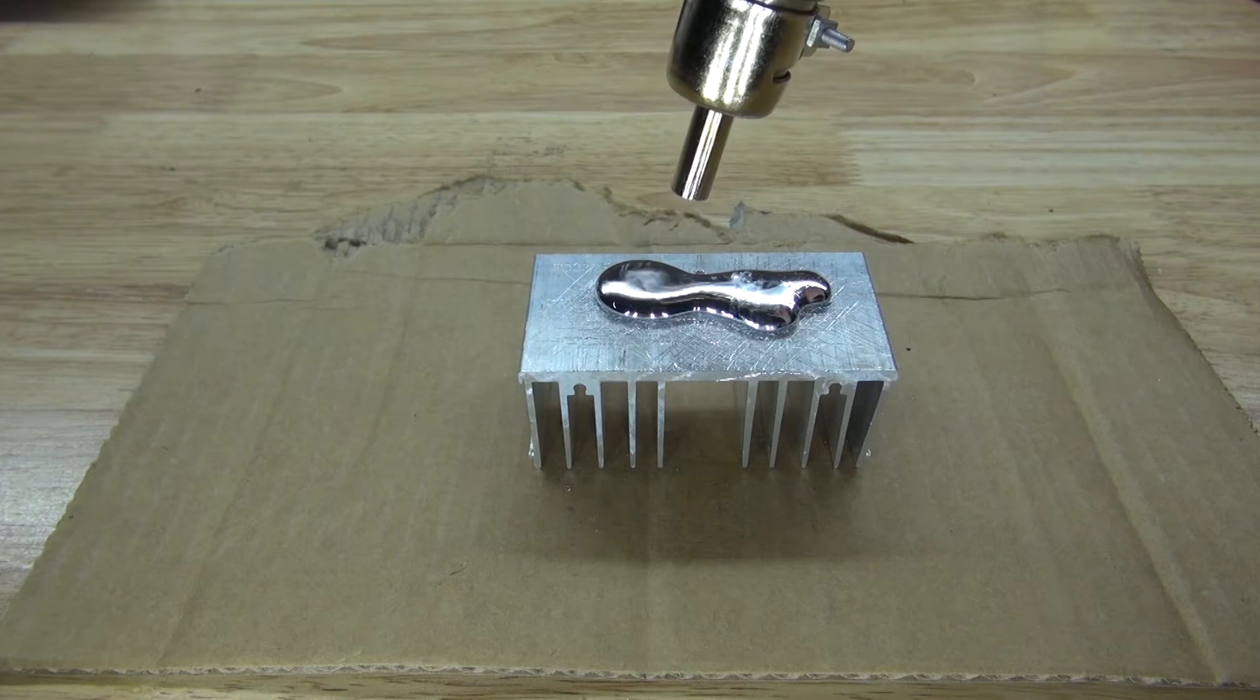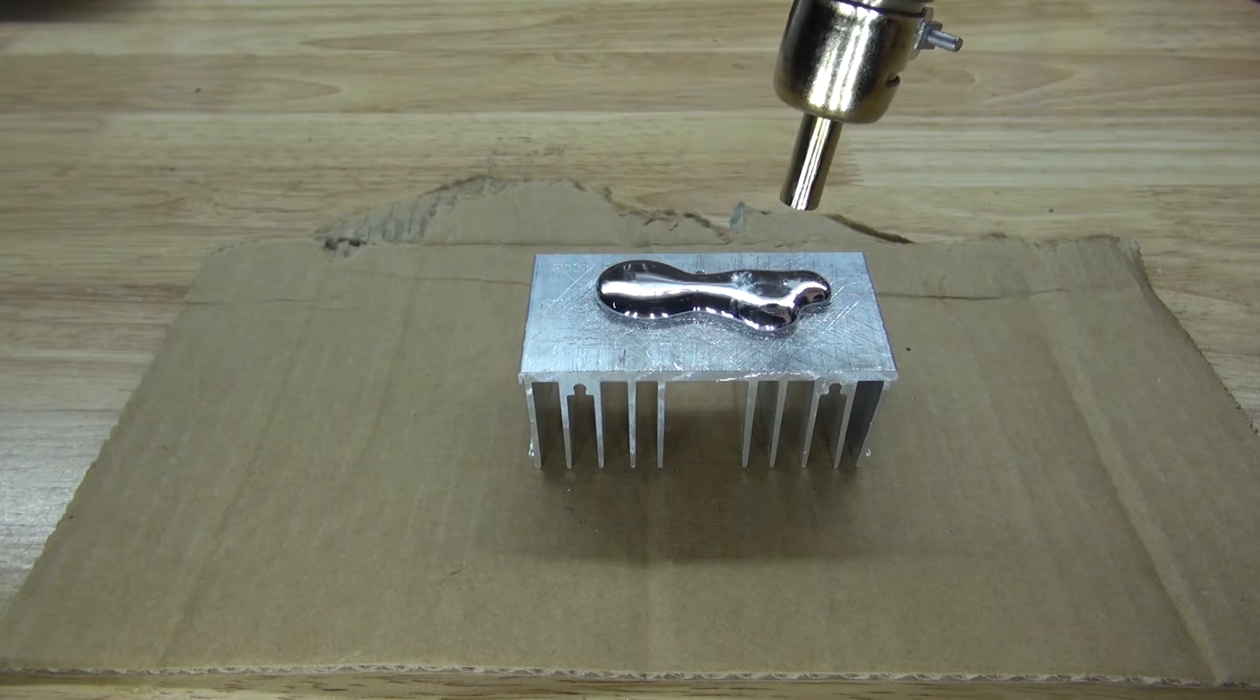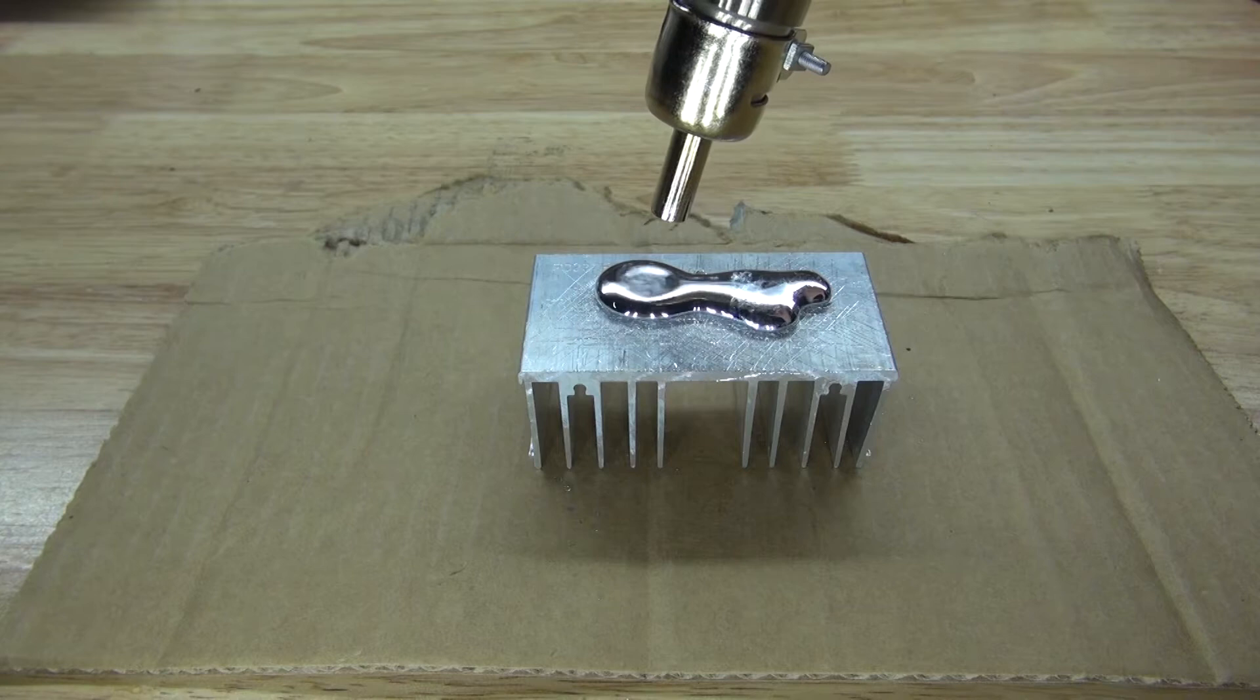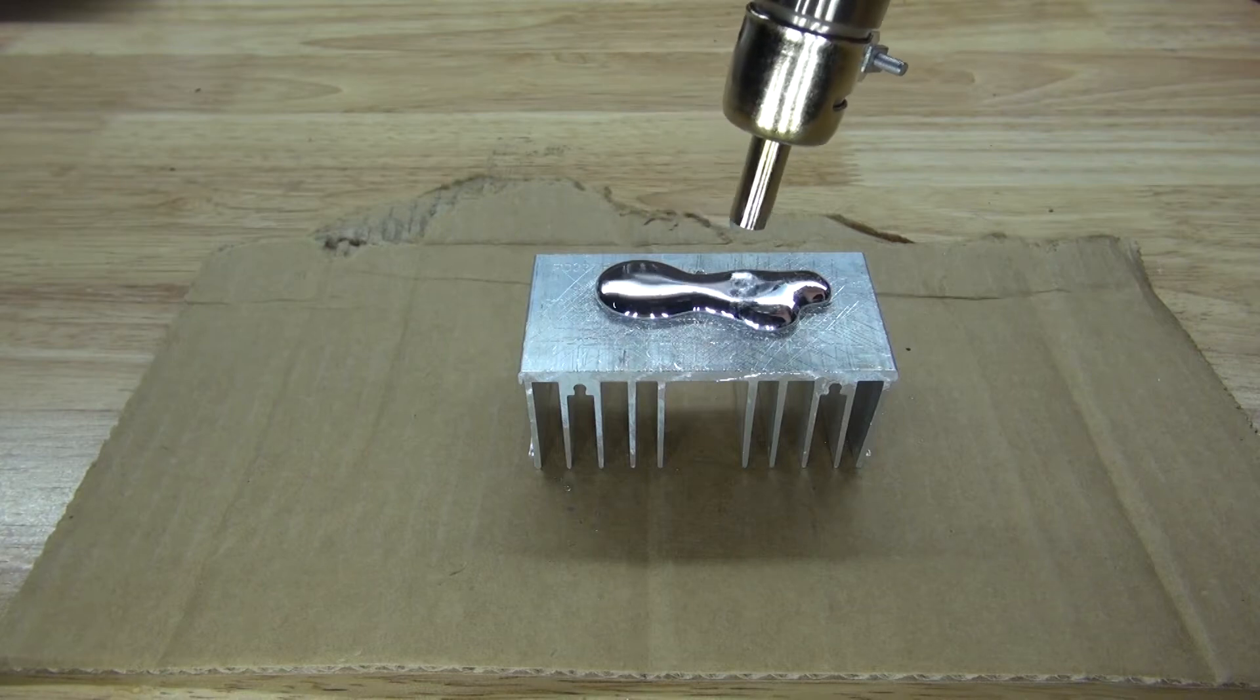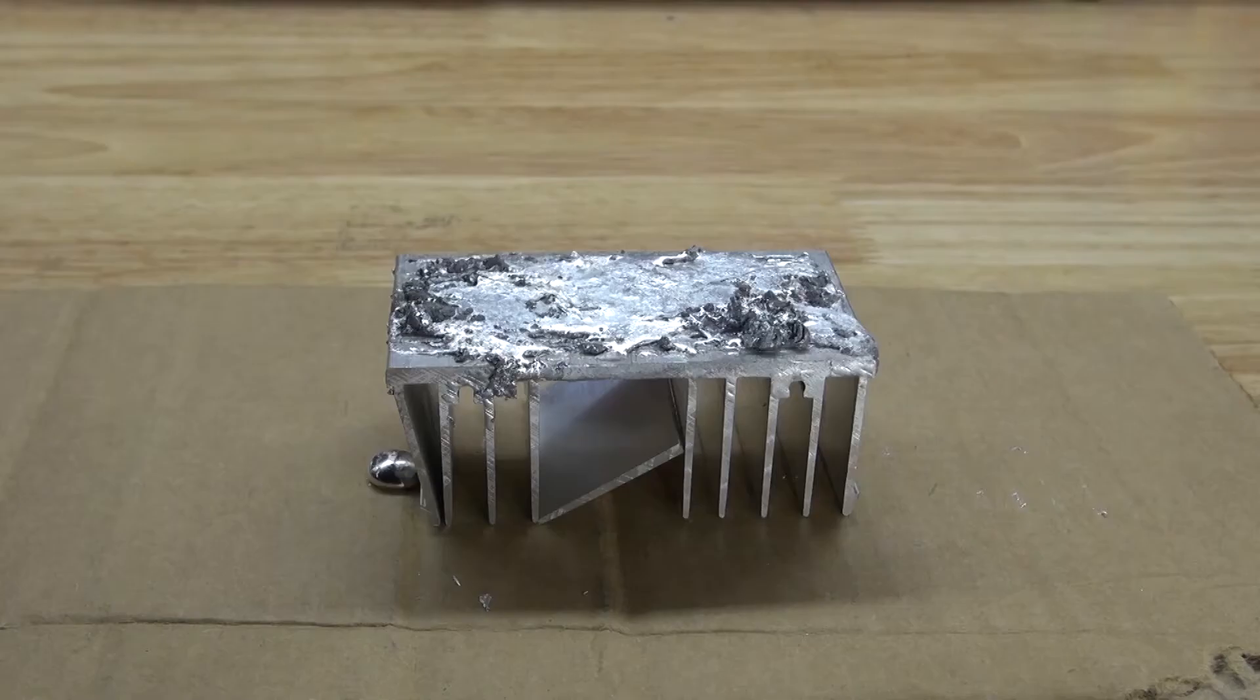The reason why I'm using this hot air gun is so that way I can speed up the process, so it can react a little bit faster. And my room is cold, so the gallium keeps solidifying too quickly. And there you have it.